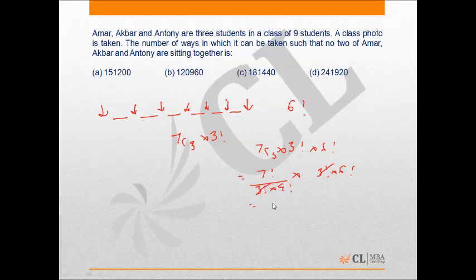So now 7 factorial by 4 factorial is nothing but 7 into 6 into 5 and then into 6 factorial. So that's 210 into 6 factorial. So that's 151200, option A.